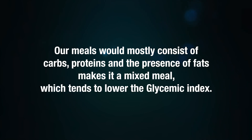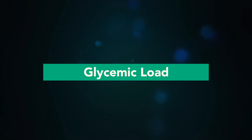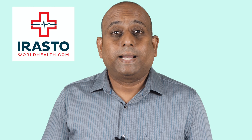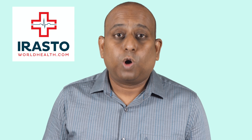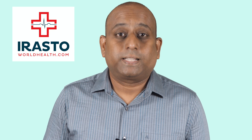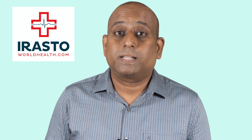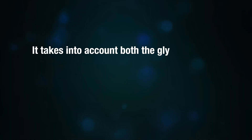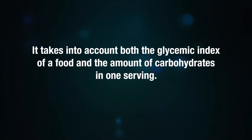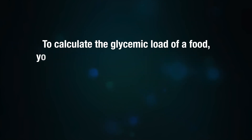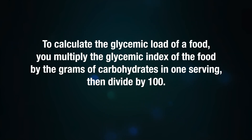Our meals should mostly consist of carbs and proteins, and the presence of fats makes it a mixed meal, which tends to lower the glycemic index. Glycemic load is a measure of how much your food raises your blood glucose levels in one serving. It takes into account both the glycemic index of the food and the amount of carbohydrates in one serving. To calculate the glycemic load, you multiply the glycemic index by the grams of carbohydrates in one serving, then divide by 100.